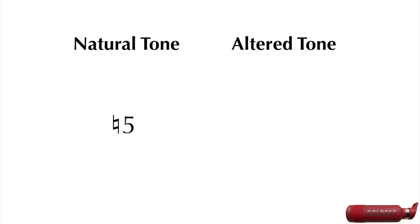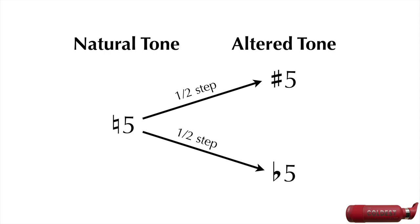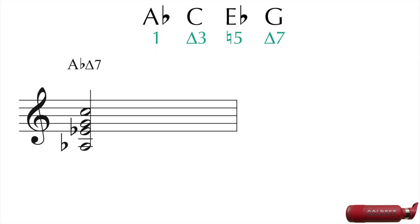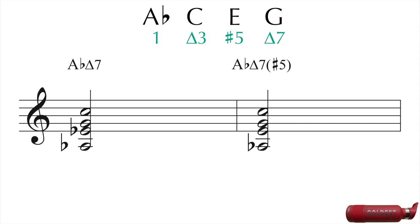To alter one of these tones, simply raise it or lower it by a half step. For example, in Ab maj7, the natural 5 is Eb. If we raise that by a half step to E natural, it becomes an altered tone. The E natural is the sharp 5.